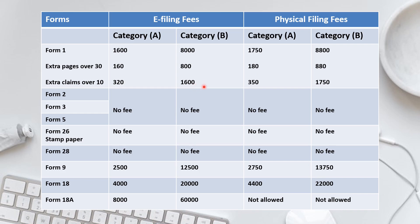Comparing with physical filing fees, there is a slight difference — physical filing fees are higher. Where e-filing is 1,600 rupees for Category A, physical filing is 1,750 rupees. For Category B, physical filing is 8,800 rupees versus 8,000 for e-filing. For excess pages, the per-sheet fee goes from 160 to 180 rupees for Category A, and from 800 to 880 rupees for Category B.